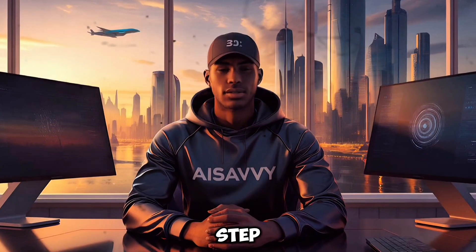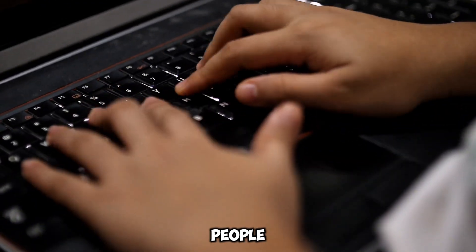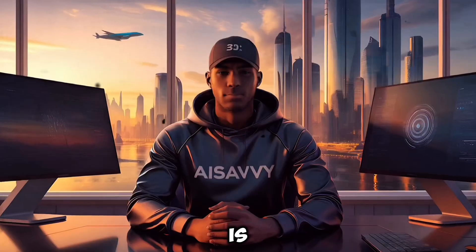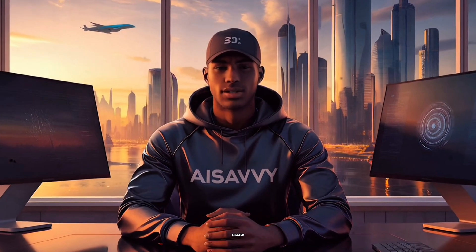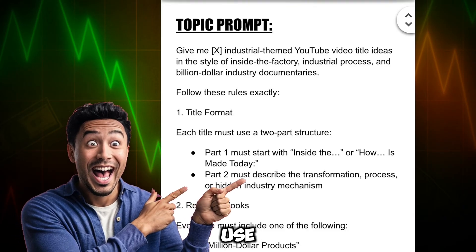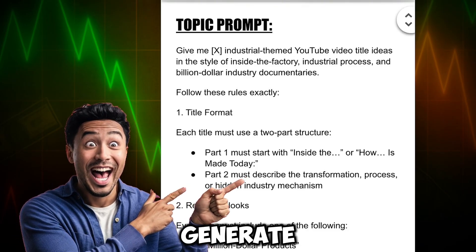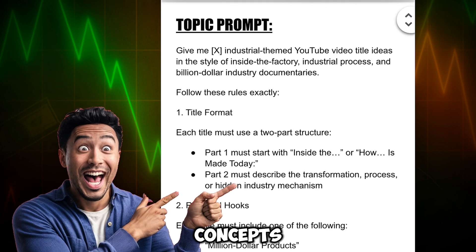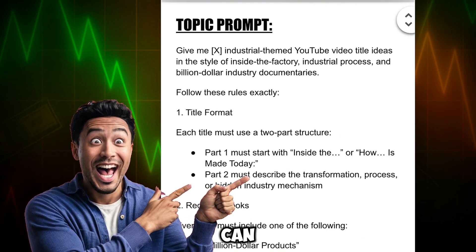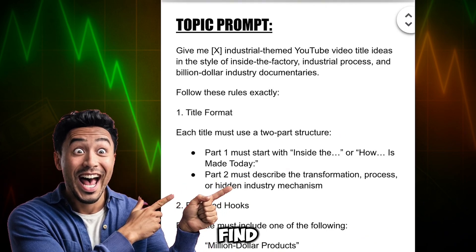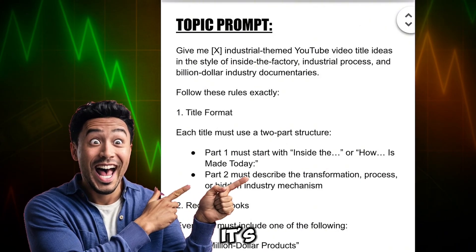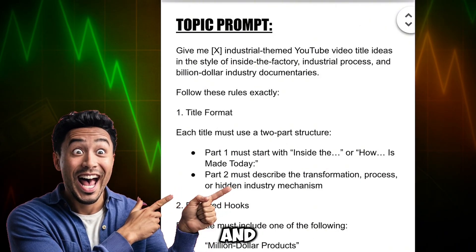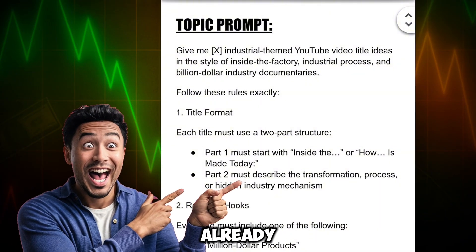The first step is coming up with video ideas that people actually want to watch. This is the foundation of every viral industrial process video. To make this step super easy, I've already created a Google Doc with ready-to-use prompts. These prompts will help you generate unique topics, full production flow concepts, and highly detailed image prompts. The link is in the description below — it's going to save you hours of brainstorming.